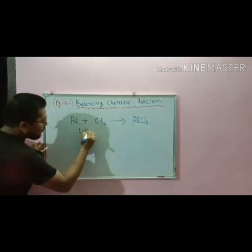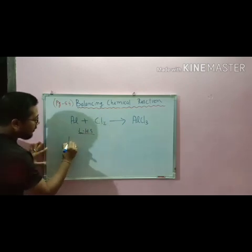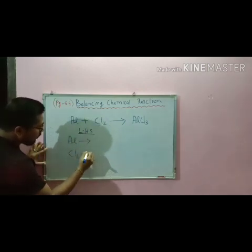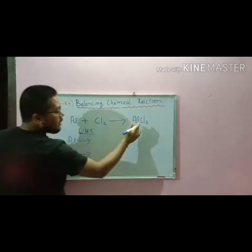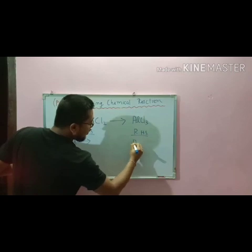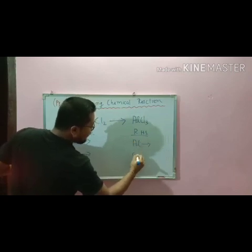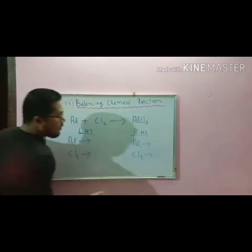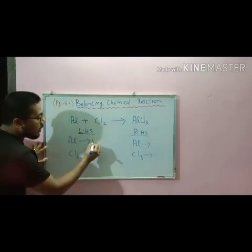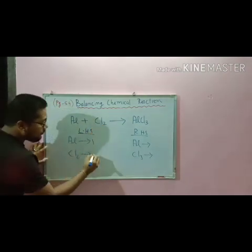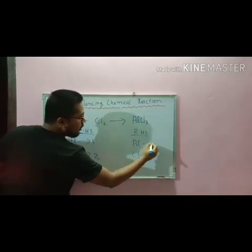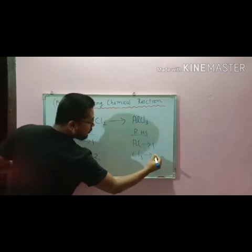In the LHS side, we are having aluminium and chlorine. In aluminium, how many atoms are there? Only one. In chlorine, two are there. On the RHS, in aluminium chloride: aluminium has one atom and chlorine has three.